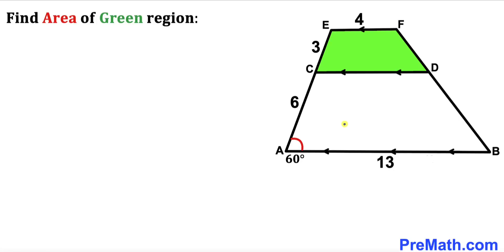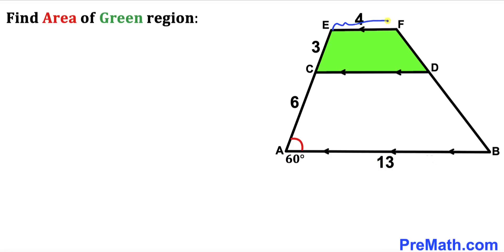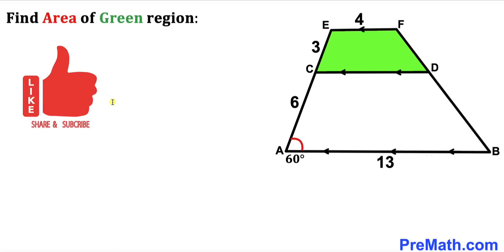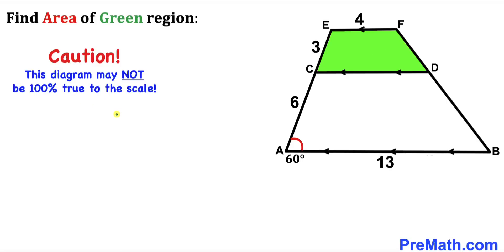Welcome to pre-math. In this video we have this trapezoid ABFE, where sides AB, CD, and EF are parallel to each other. Side AB is 13 units, EF is 4 units, segment EC is 3 units, and segment AC is 6 units. Angle BAC is 60 degrees. Our task is to calculate the area of the green shaded region. Please keep in mind that the figure may not be 100% true to scale.